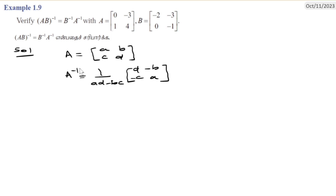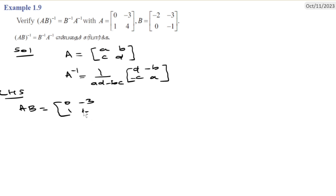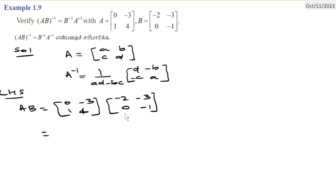First, let's compute the LHS — that is, AB whole inverse. First, we multiply AB. A matrix is: 0, minus 3, 1, 4. B matrix is: minus 2, minus 3, 0, minus 1.